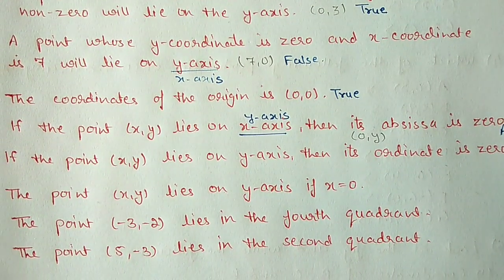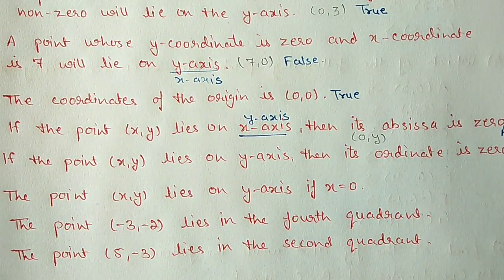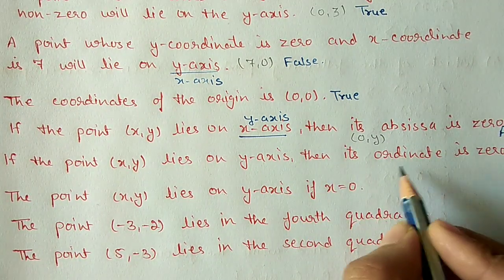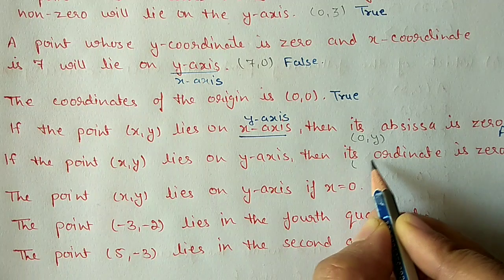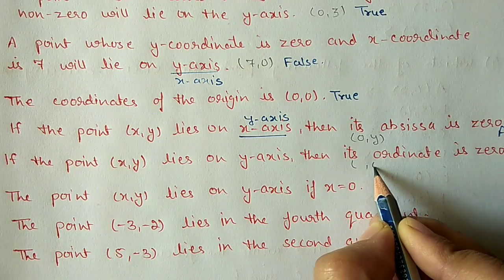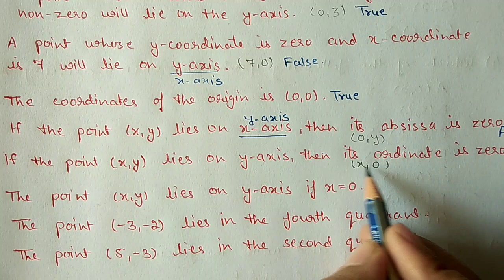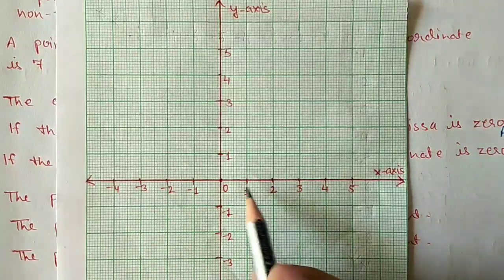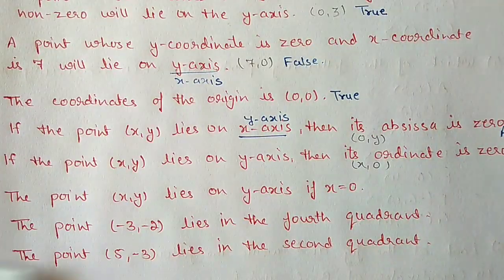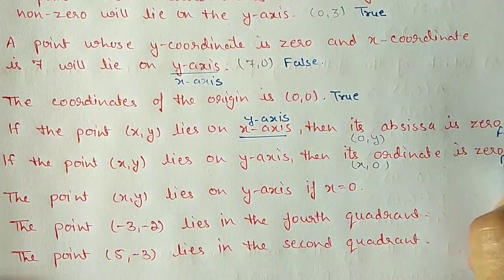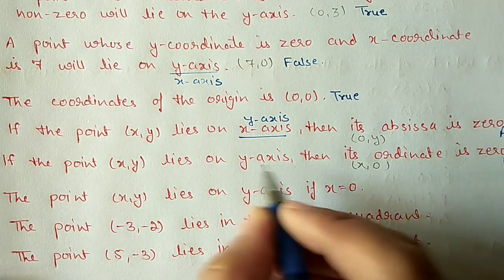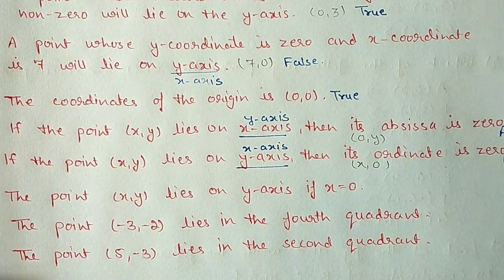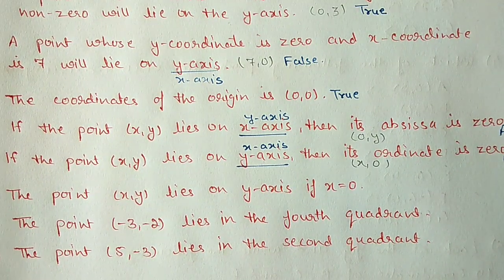Part e: if the point (x, y) lies on the y-axis, then its ordinate is 0. Ordinate means the y-value. If ordinate is 0, the point is (x, 0), which lies on the x-axis. So this statement is false. The correct statement is: the point will lie on the x-axis.